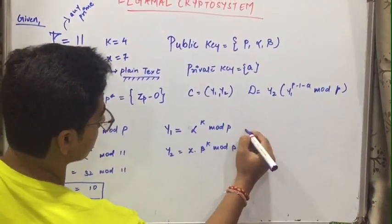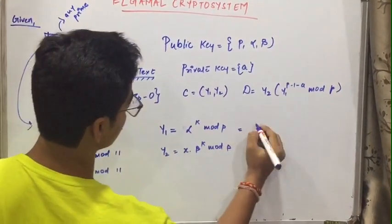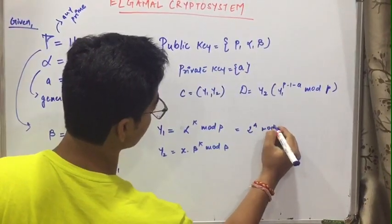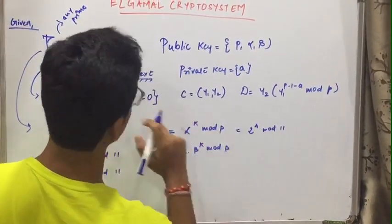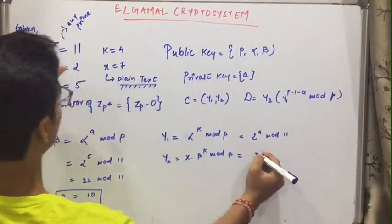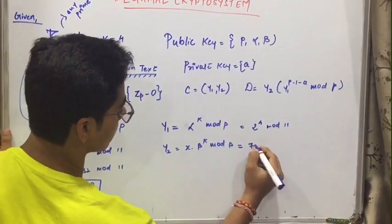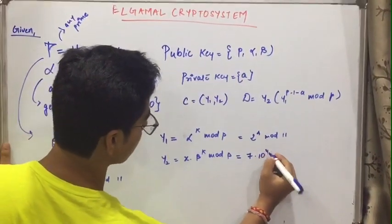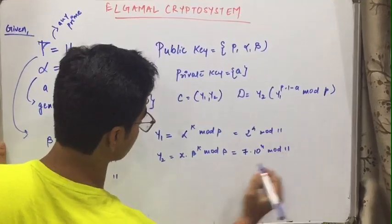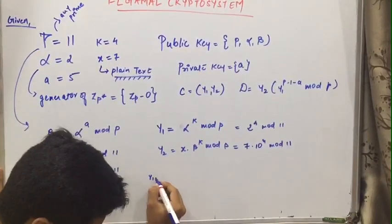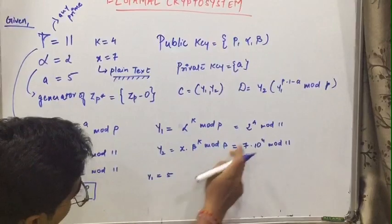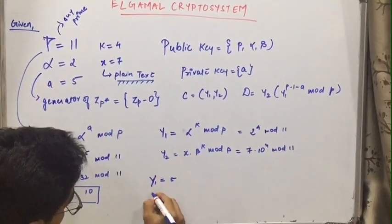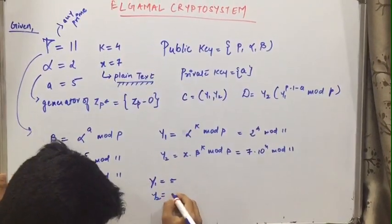So what is y1? y1 equals to alpha is 2, 2 rest to k that is 4 mod 11 that is p. and this will be x is 7, 7 into what is beta we got? 10. 10 rest to 4 mod 11. So what will be y1? y1 will be 5, 2 rest to 4 that is 16, 16 mod 11 that is 5. and y2 will be 7.